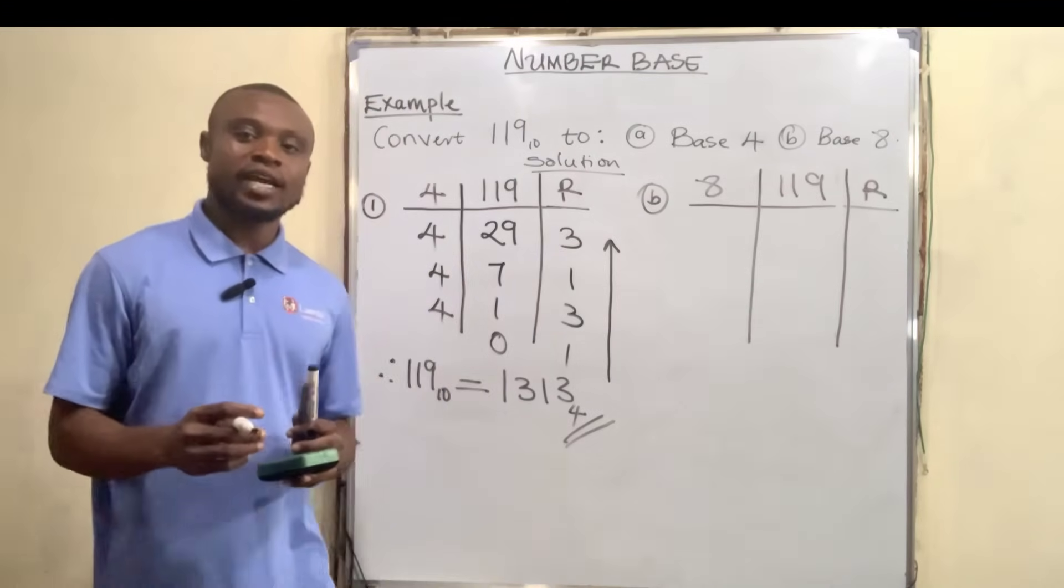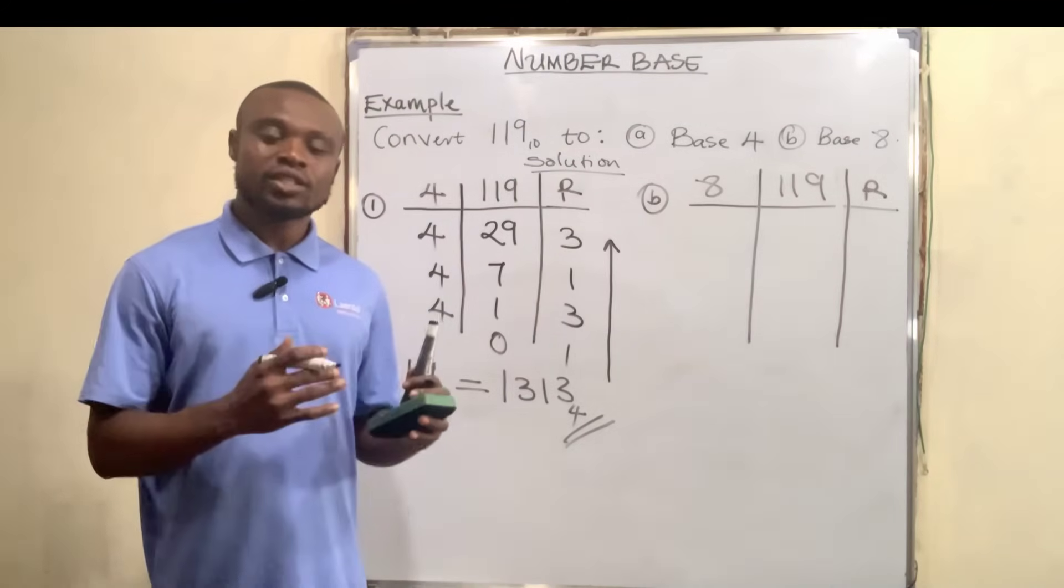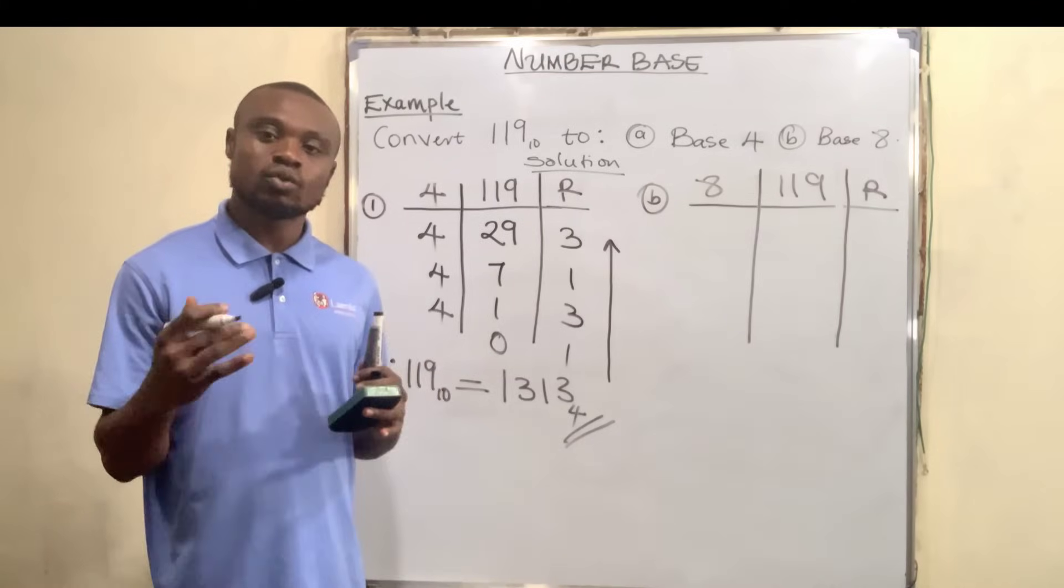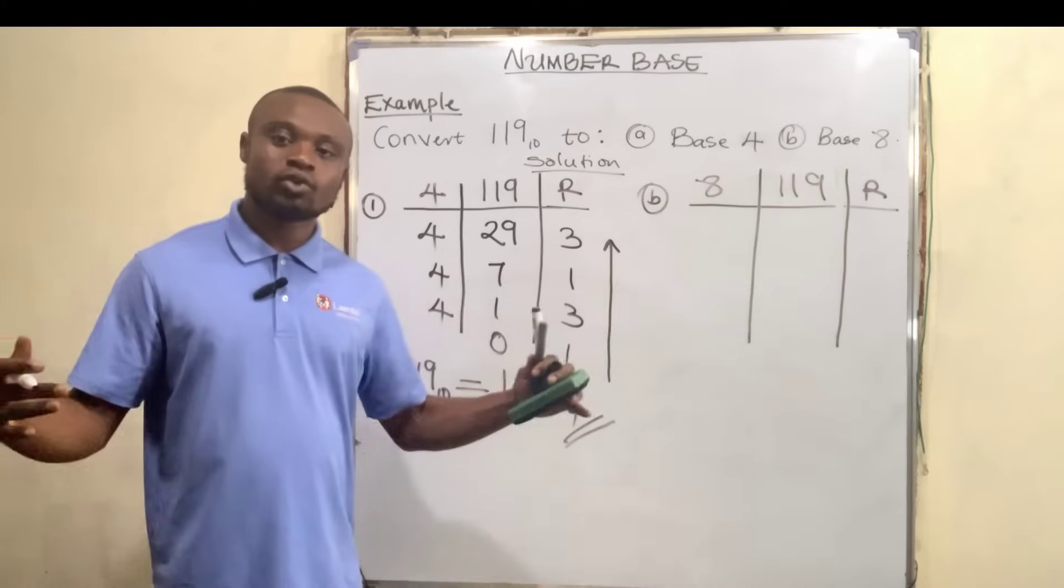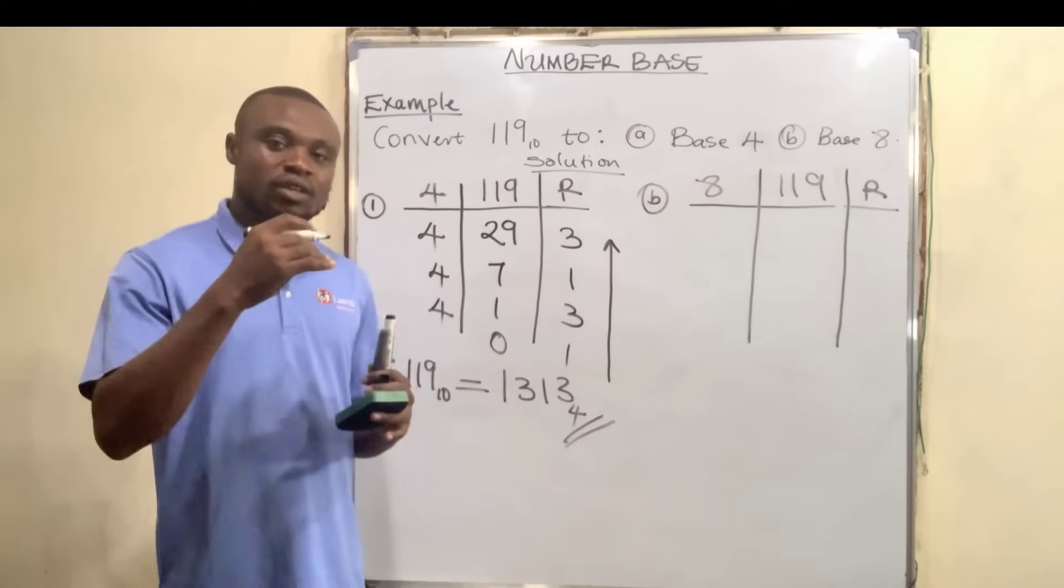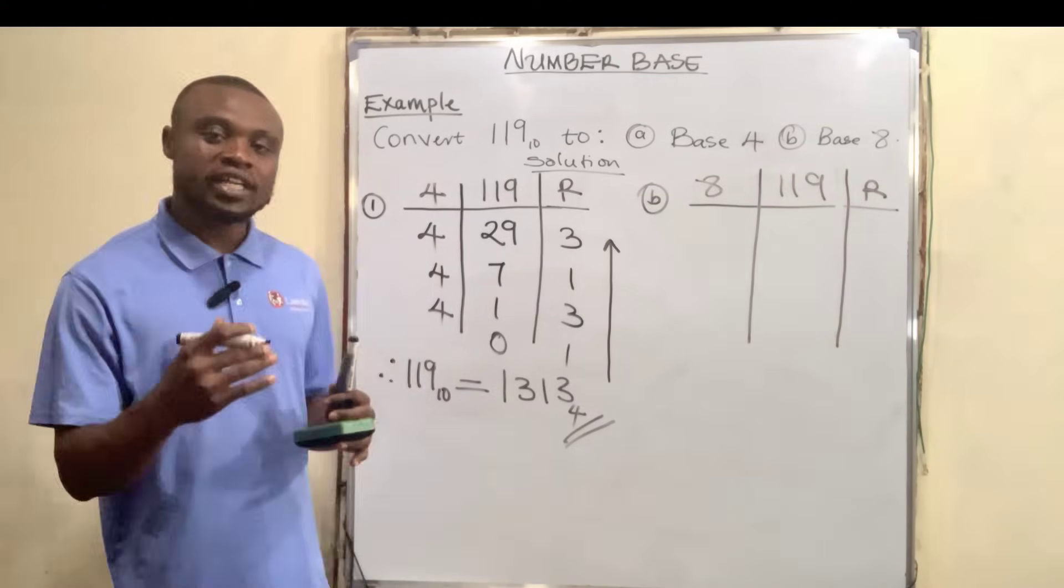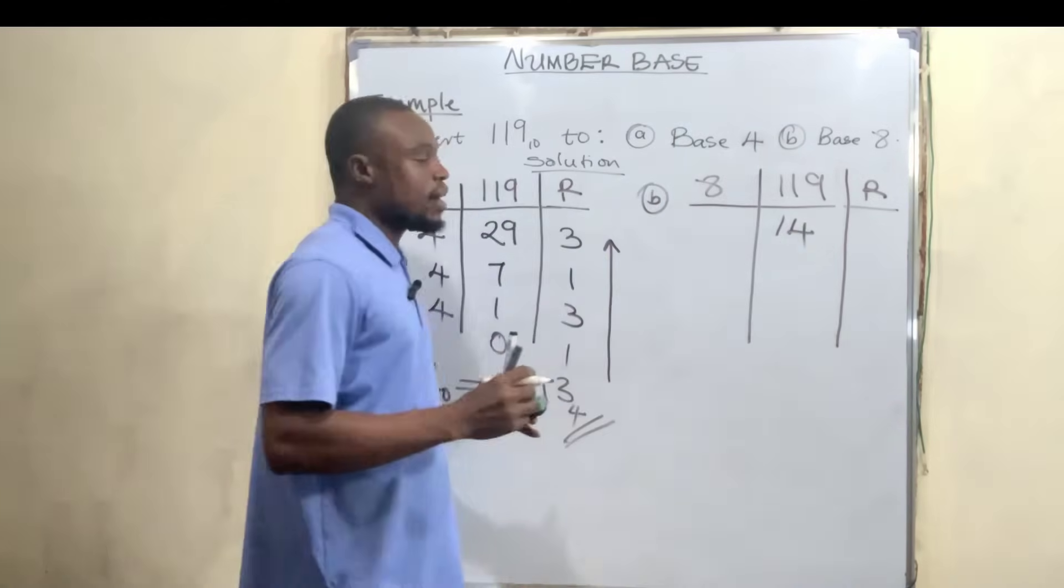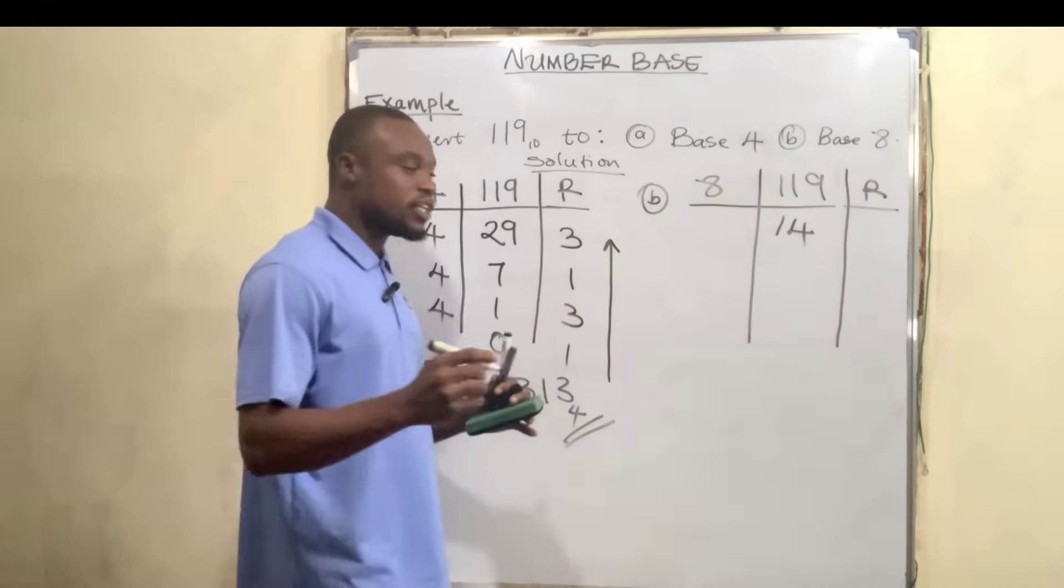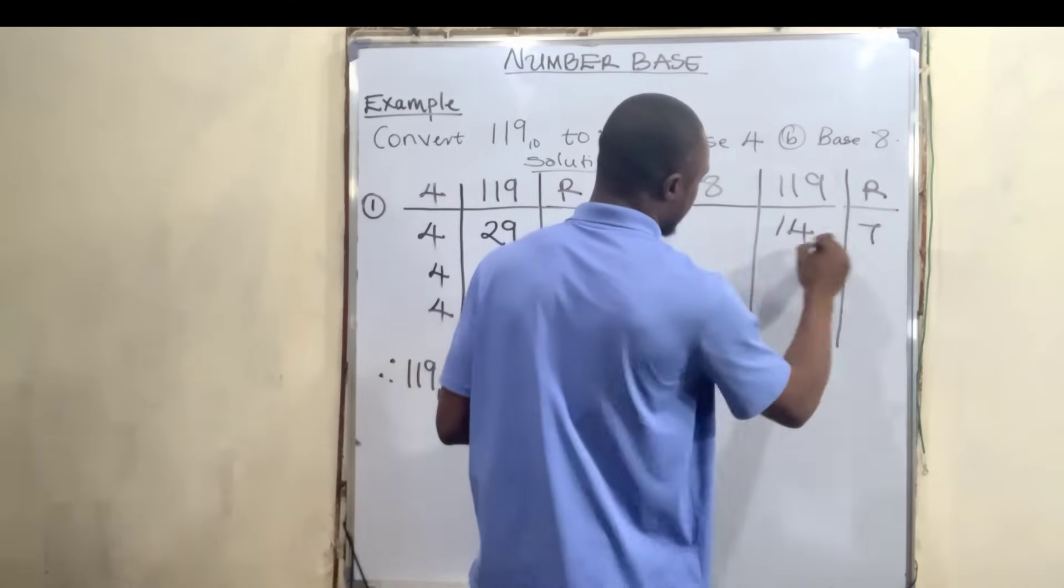119 divided by 8. The closest number is 112, because 119 divided by 8 would give us a whole lot of decimal numbers. But 112 divided by 8 is 14. 119 minus 112 is 7, so we have a 7 here.